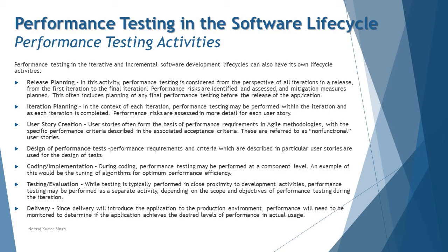Similarly, during iteration planning — like every sprint plan — there are activities from a performance point of view as well. Performance testing may be performed within the iteration, and as each iteration is completed, future performance risks are assessed in more detail for each user story identified during the release planning phase. In the specific sprint where that risk is addressed, you analyze it in greater detail to determine the level of risk and define your mitigation plan.